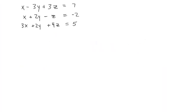In our example problem, we have x minus 3y plus 3z is equal to 7, x plus 2y minus z is equal to negative 2, and 3x plus 2y plus 4z is equal to 5. The first thing we want to do is write it in the matrix using all of the coefficients.